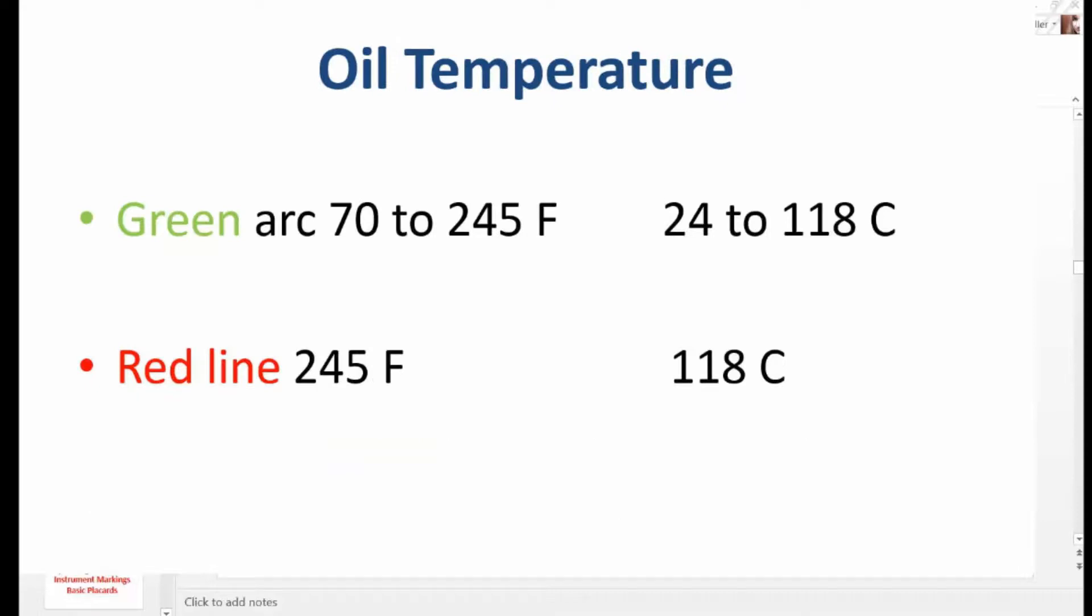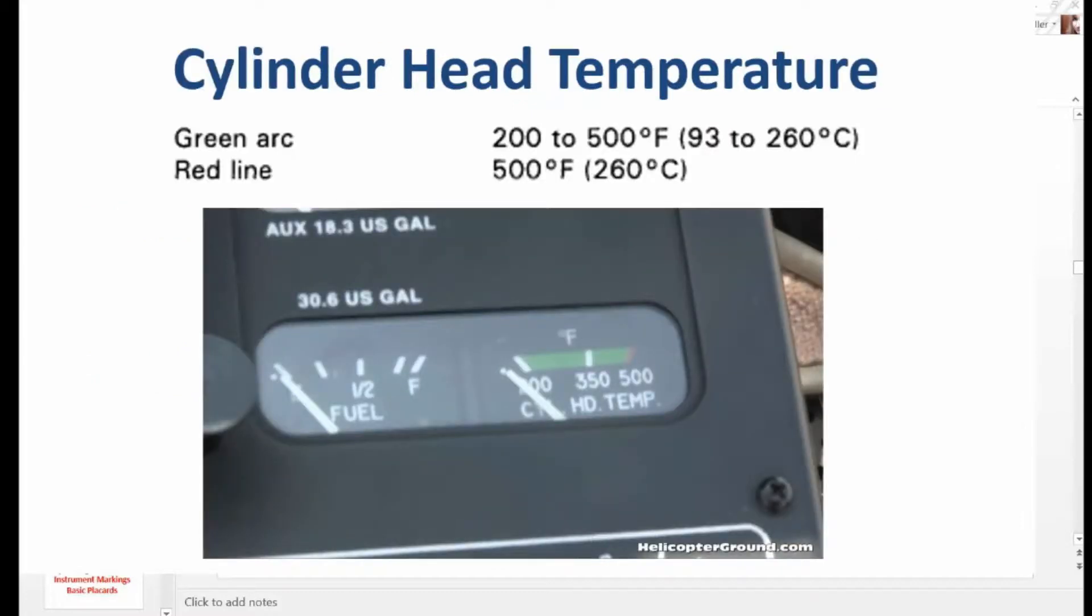Oil temperature. Green arc, 70 to 245 Fahrenheit or 24 to 118 Celsius. Red line for the oil temperature, 245 Fahrenheit, 118 Celsius. Cylinder head temperature. Green arc, 200 to 500 degrees Fahrenheit, 93 to 260 degrees Celsius. Your red line, your limitation is at 500 degrees Fahrenheit, 260 degrees Celsius.